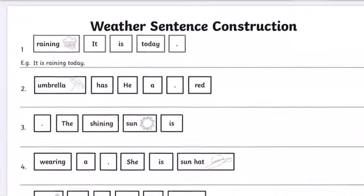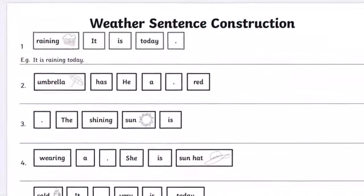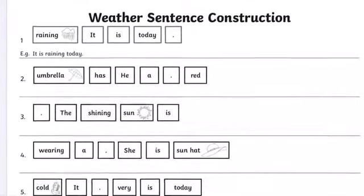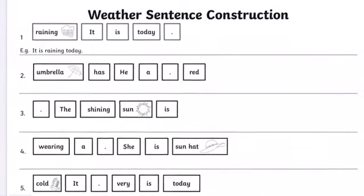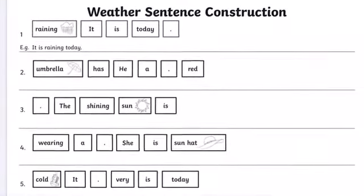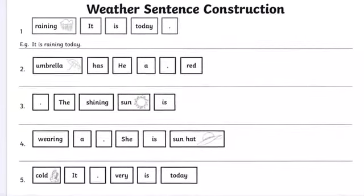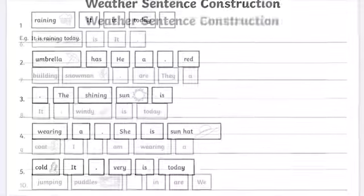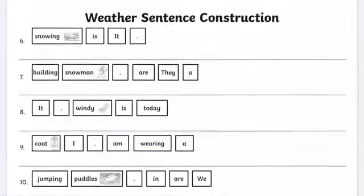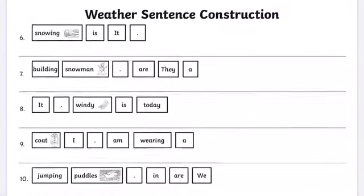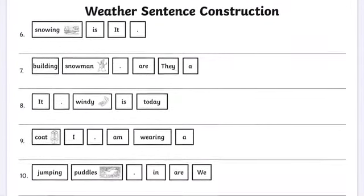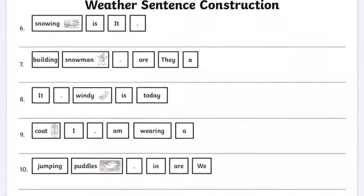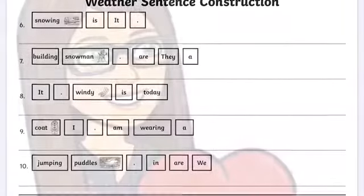Now you can go and make your sentences. For example, you would write: it is raining today. Number two: he has a red umbrella. Remember, you don't need to write on this paper — writing the sentences in your notebook is perfect.